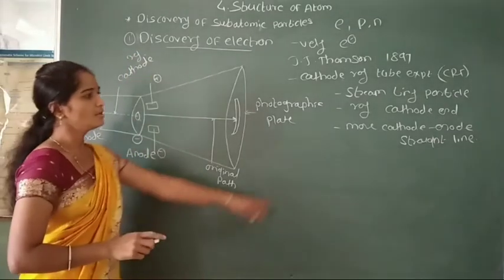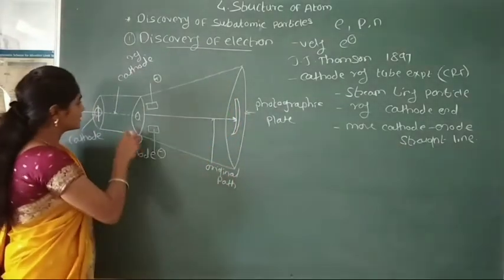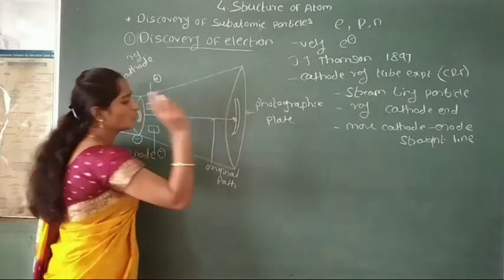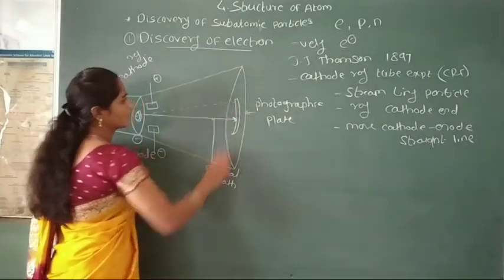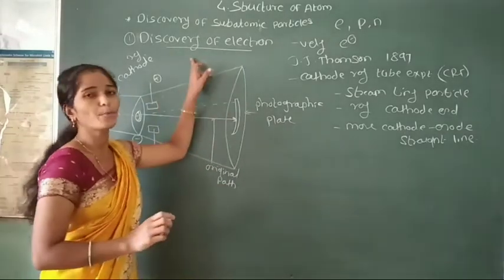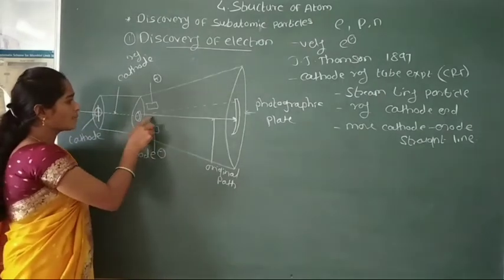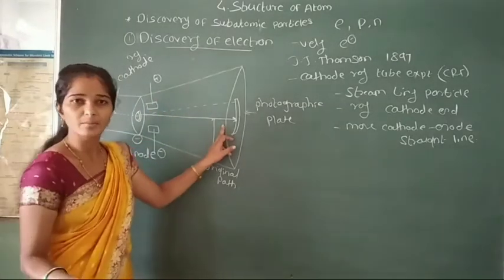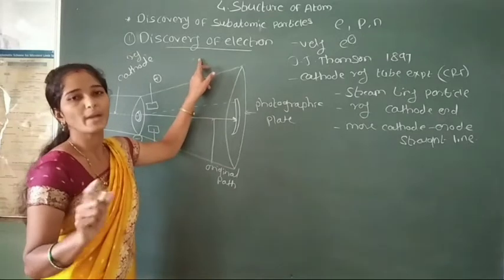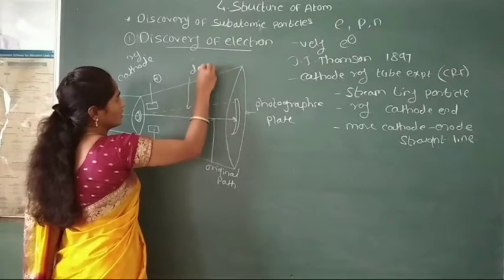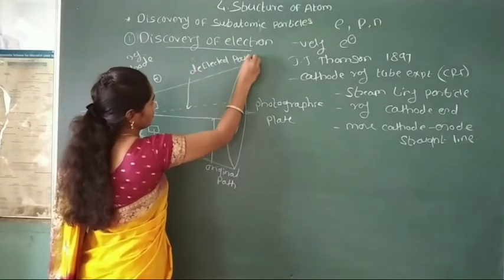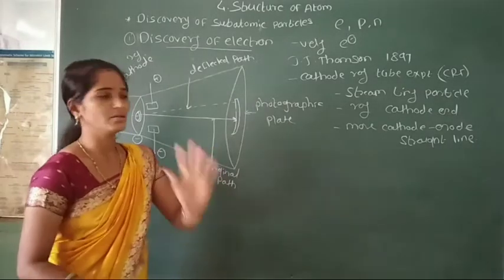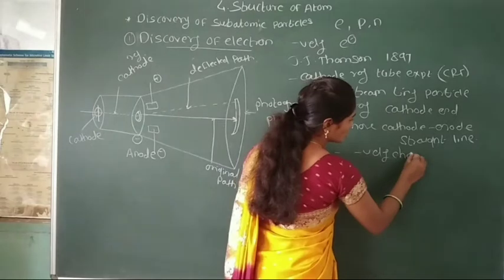These rays migrate in a straight line. But after passing through the pole of the anode, these cathode rays do not move in a straight line. Instead, these cathode rays migrate or deflect toward the positive magnet. That means there is a deflection toward the positive magnet — this is a deflected path. This shows that these cathode rays are negatively charged particles.